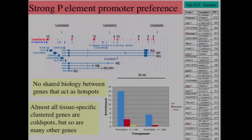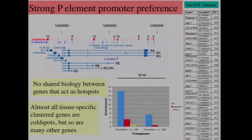Another striking thing about P elements that was frustrating in our project is their very strong hotspot preference — they don't go randomly throughout the genome. They were the lowest curve on the saturation curves. Just plus or minus 100 base pairs around the promoter, the enrichment for P elements is 16-fold. Even plus or minus 500 base pairs, it's still substantial compared to other elements.